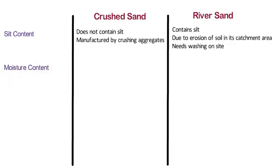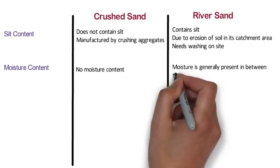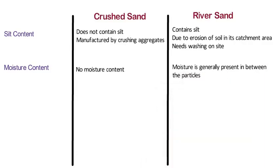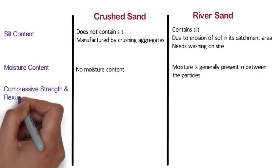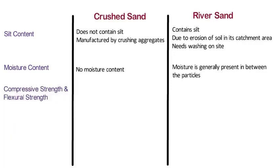Moisture Content: Crushed sand does not contain any moisture. Whereas in the case of natural sand, moisture is generally present between the particles, and hence it affects the assumptions of concrete mix design and quality of concrete. Compressive Strength and Flexural Strength: The compressive strength as well as flexural strength of concrete made from crushed sand is higher than that made from natural sand, whereas those of concrete made from natural sand are lower than crushed sand.